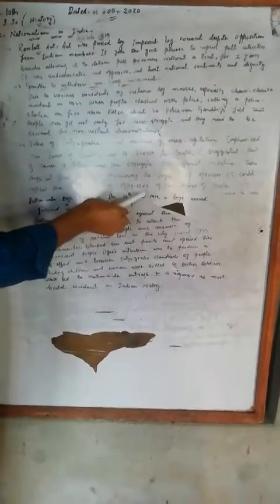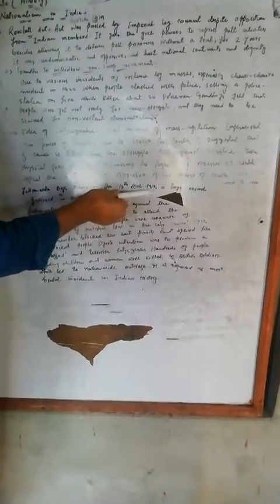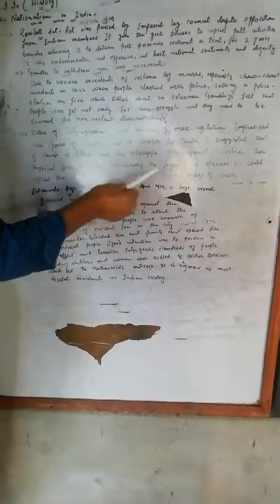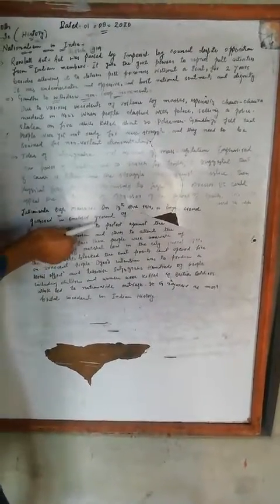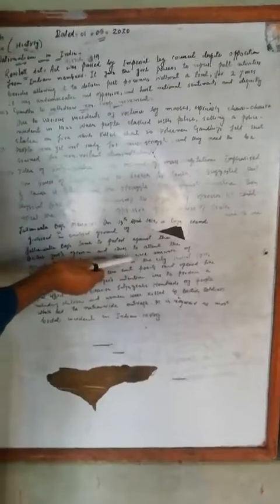This is the appeal of Jallianwala Bagh. On 13th April 1919, a large crowd gathered in the enclosed ground of Jallianwala Bagh — some to protest against British oppression, others to attend the annual Baisakhi fair.